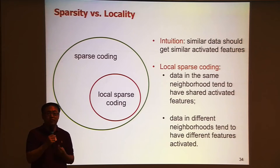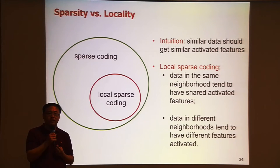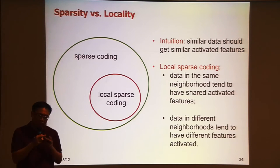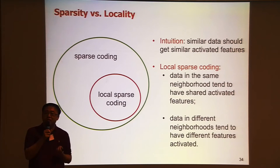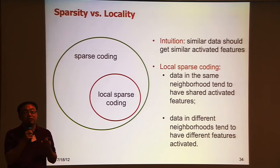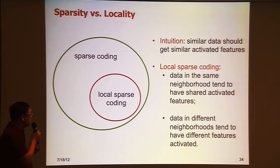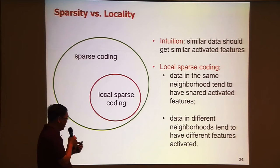So if two data points are similar, they should get sparse representations which share common activated dimensions in the new representation. That's the intuition. If you think along this way, for a group of data points falling into a local neighborhood — they are similar to each other — they should be associated to a similar set of dimensions. That means there's a kind of local association of the codes and the data points. We call this local sparse coding.